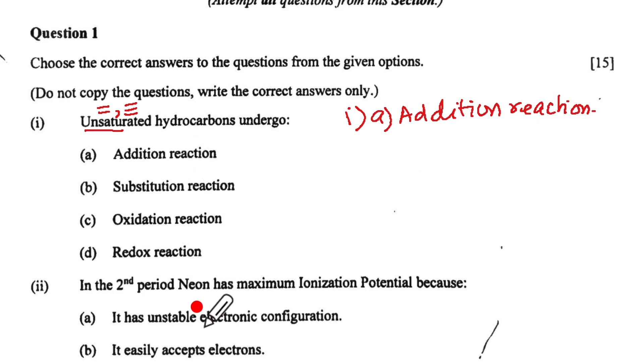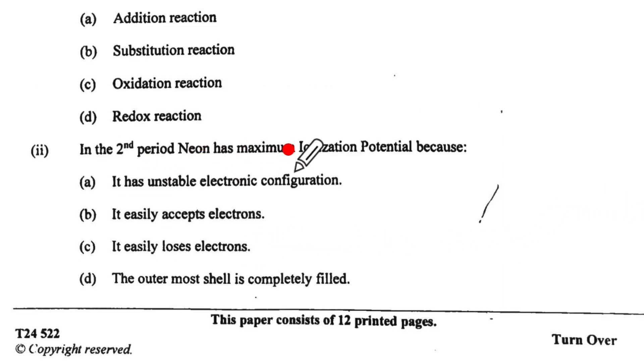Now for the second one onwards I am just going to write the options A, B, C or might just tick mark. Let us come to the second part. In the second period Neon has maximum ionization potential because now remember Neon is your group 18 which means its electronic configuration is going to be 2,8. Now also we know that it has got stable electronic configuration and its last shell is completely filled. Also it will have more nuclear charge and less atomic radius in comparison.